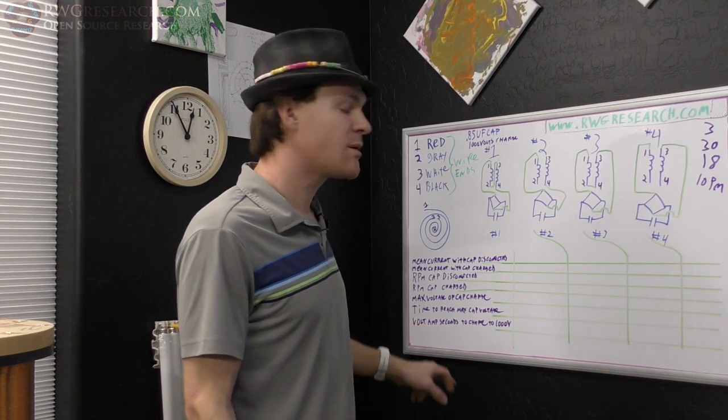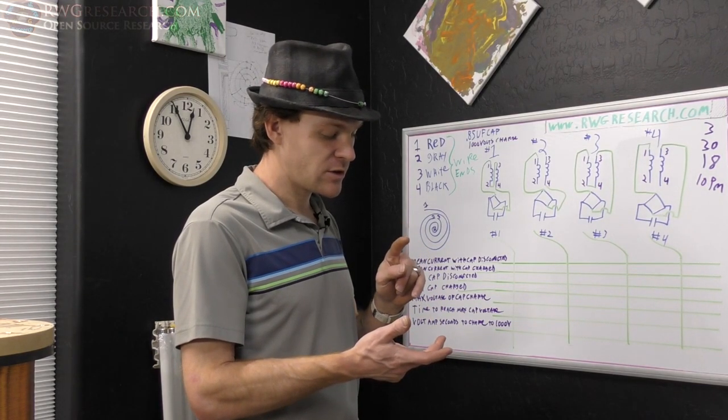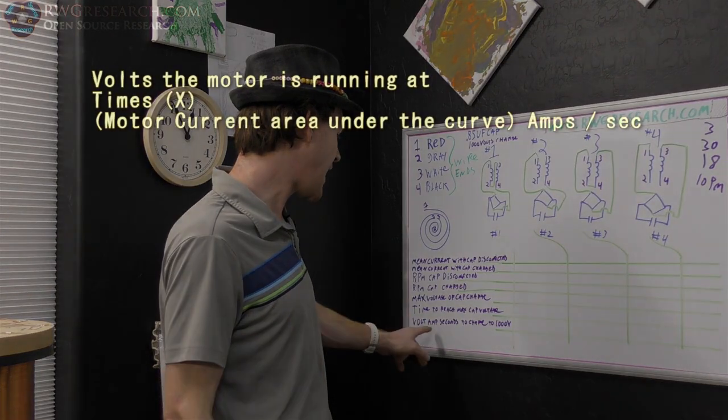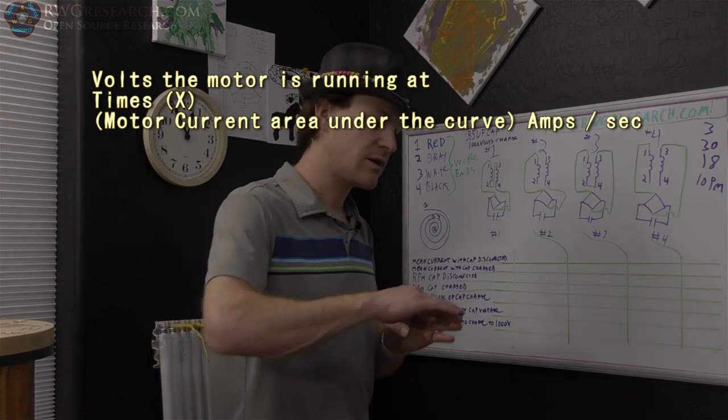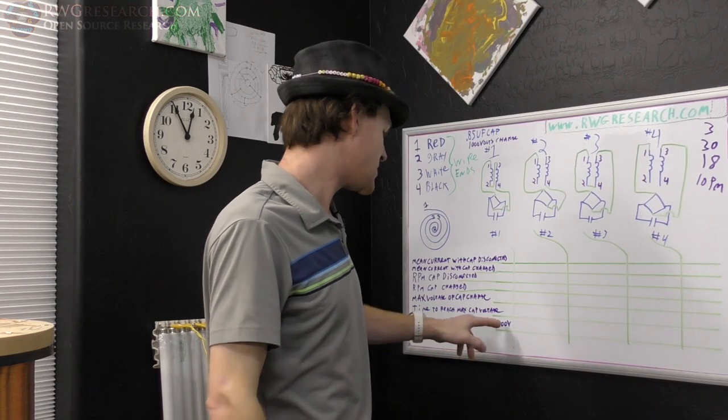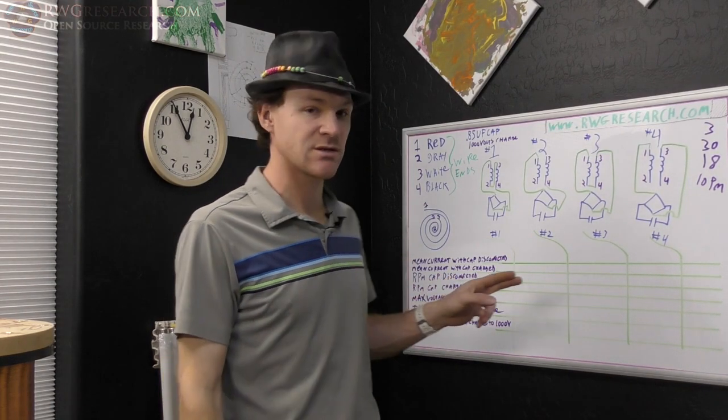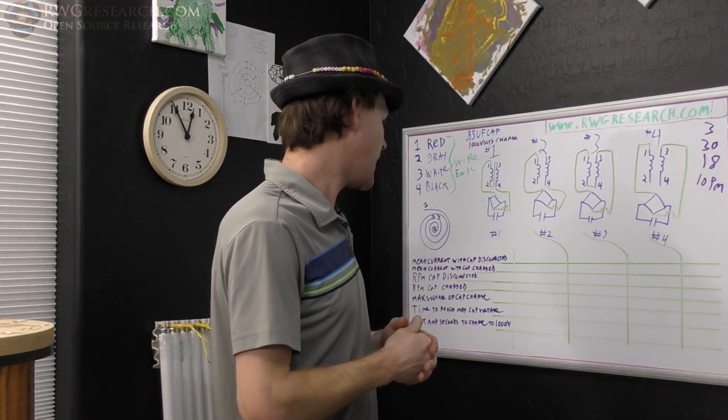And then the time to reach the max cap voltage. And then we're going to measure the area under the curve of the input voltage and come up with a value called volt amp seconds to charge to 1,000 volts.